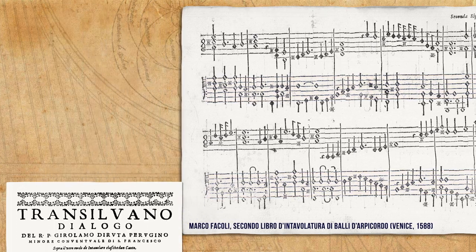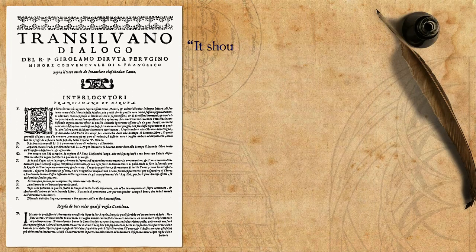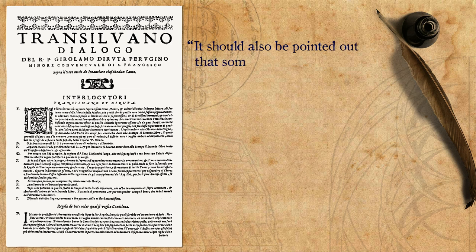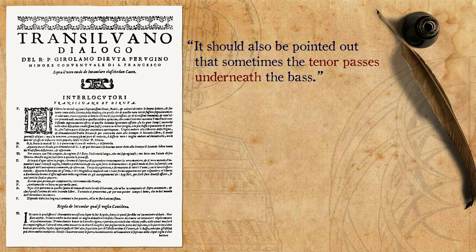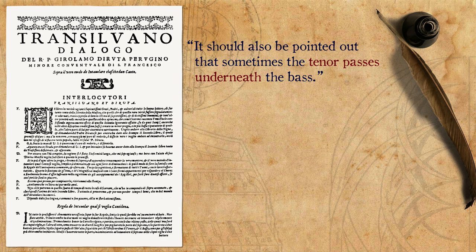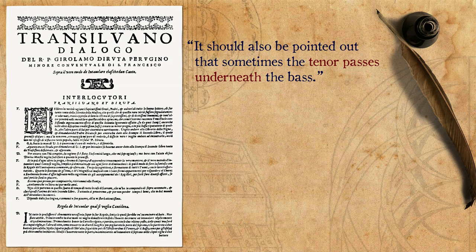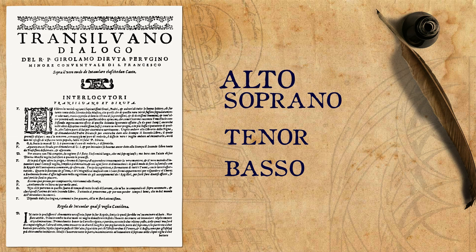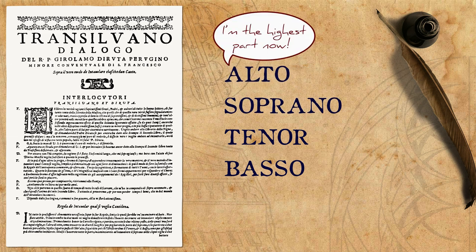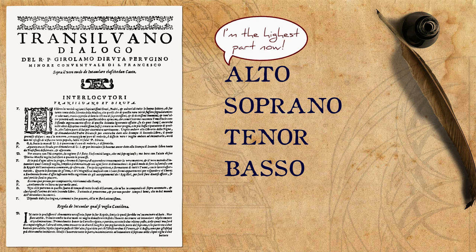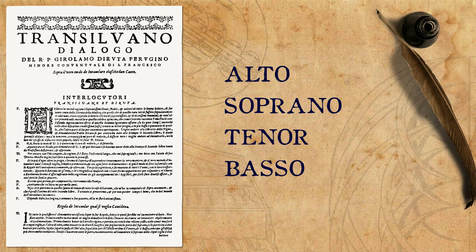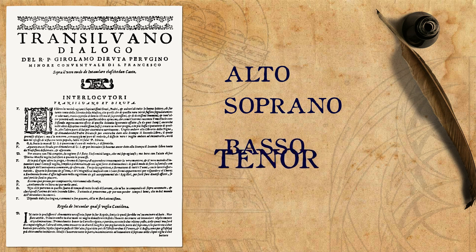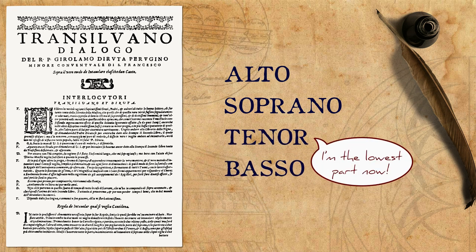The following comment by Di Ruta is extremely important: 'It should also be pointed out that sometimes the tenor passes underneath the bass.' This holds within it the unfortunate fact that Di Ruta's simple instruction of copying the soprano as the top part and the bass as the lowest part is not the full picture. In Renaissance polyphony, the alto might go above the soprano, and the tenor might find itself acting as the lowest voice, either because it went below the bass or because the bass had a rest.